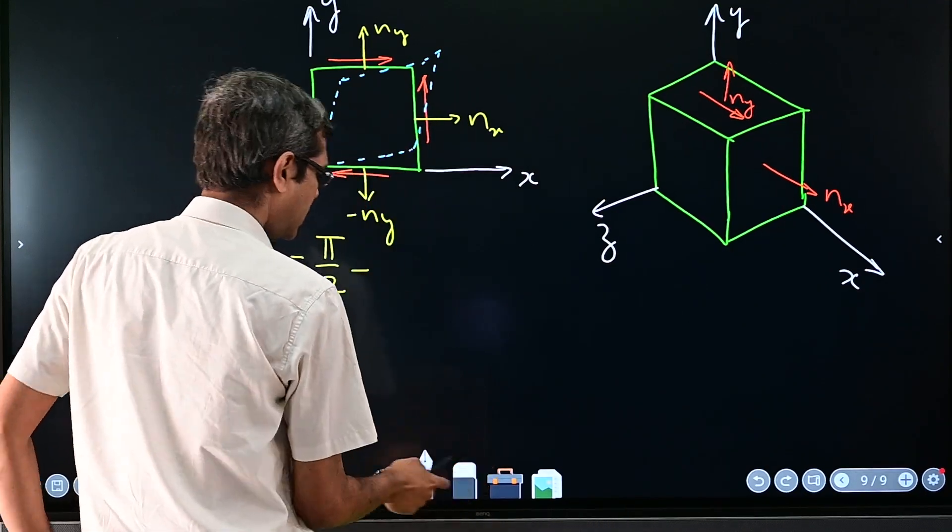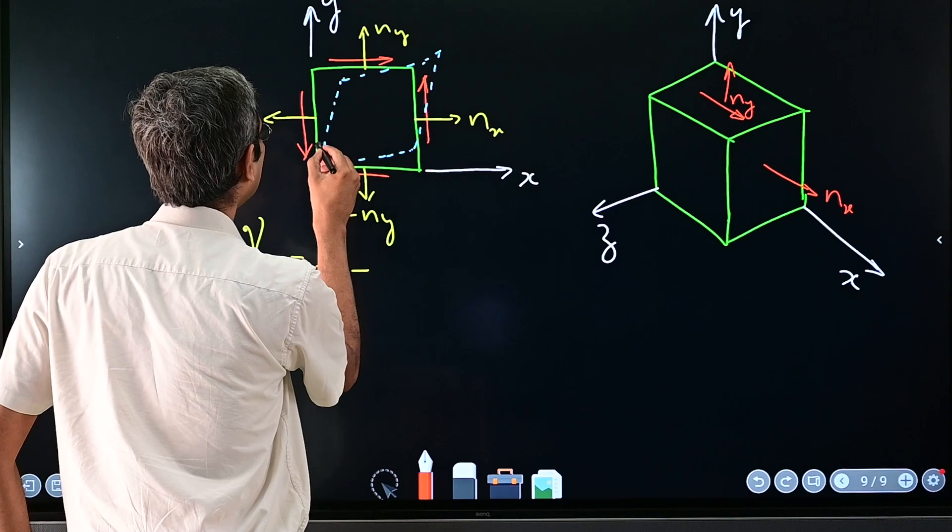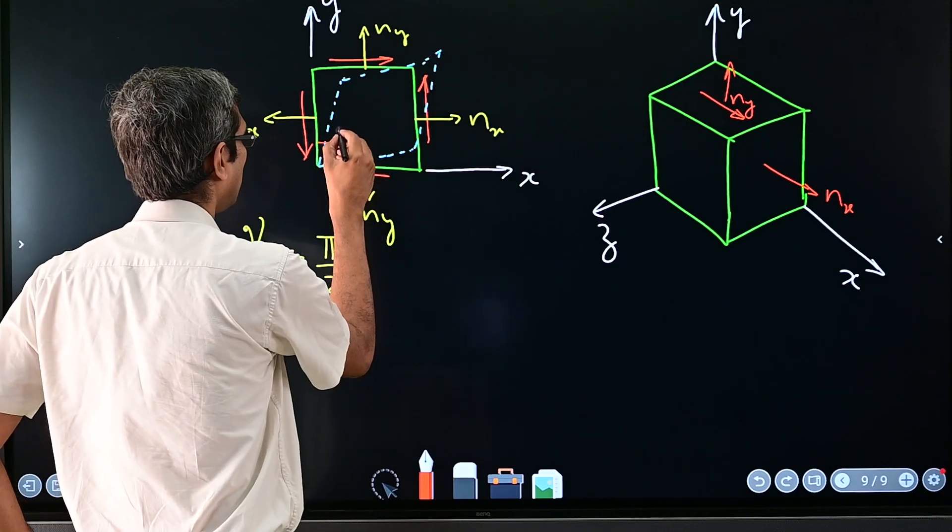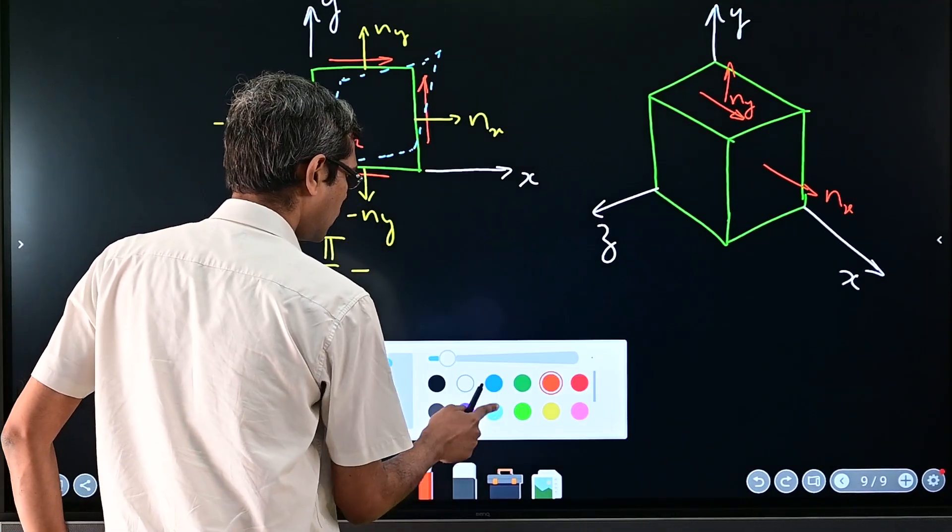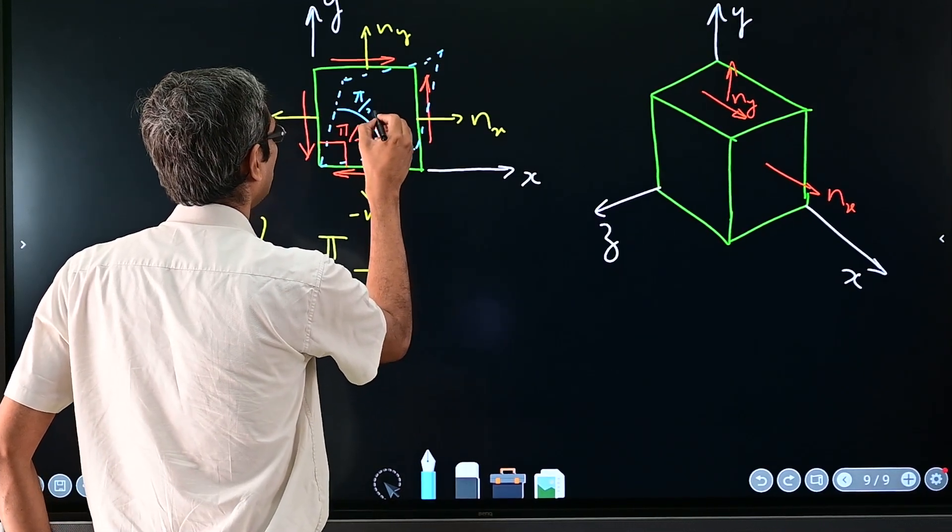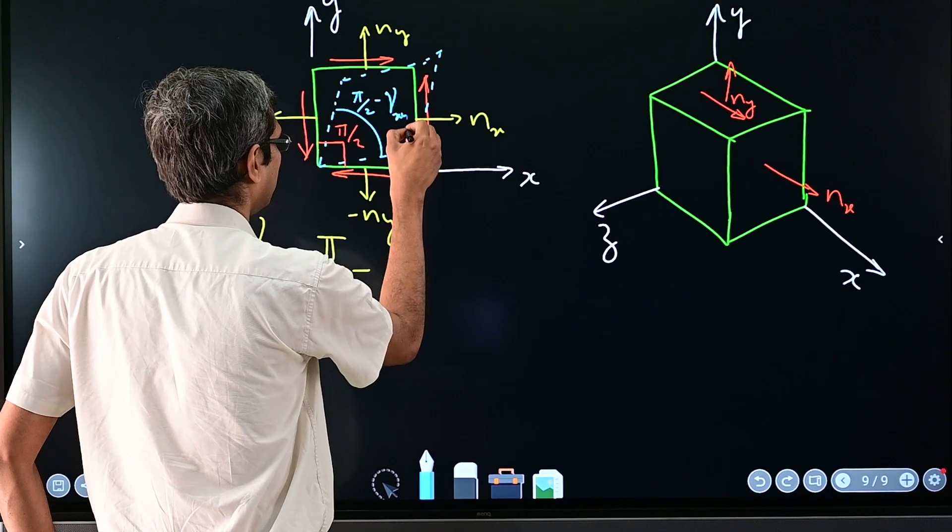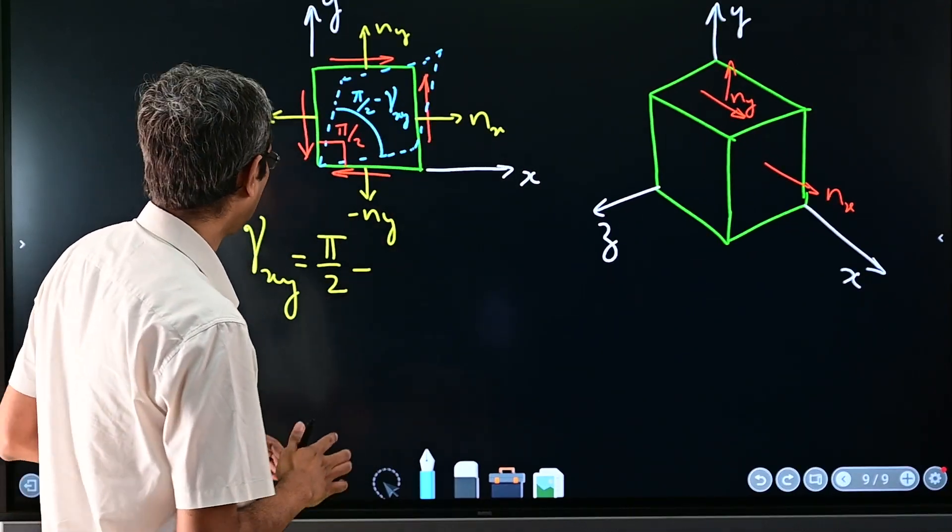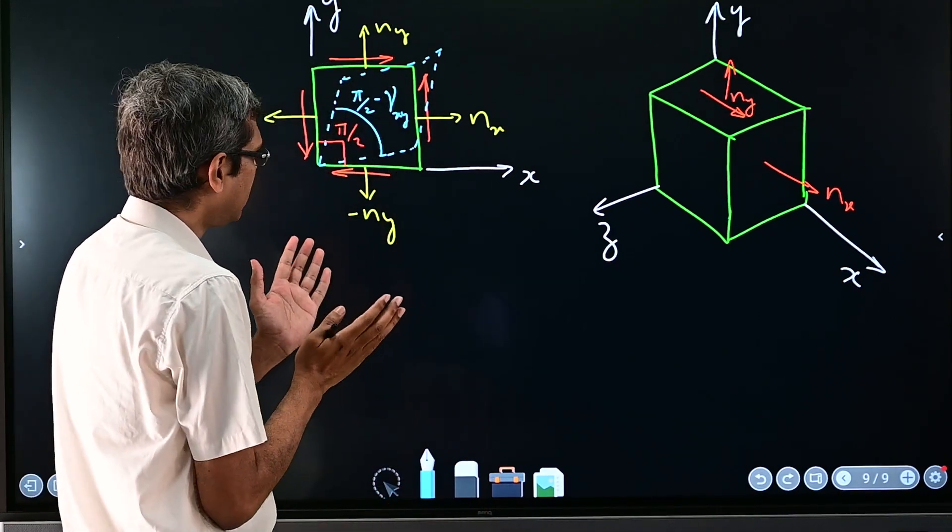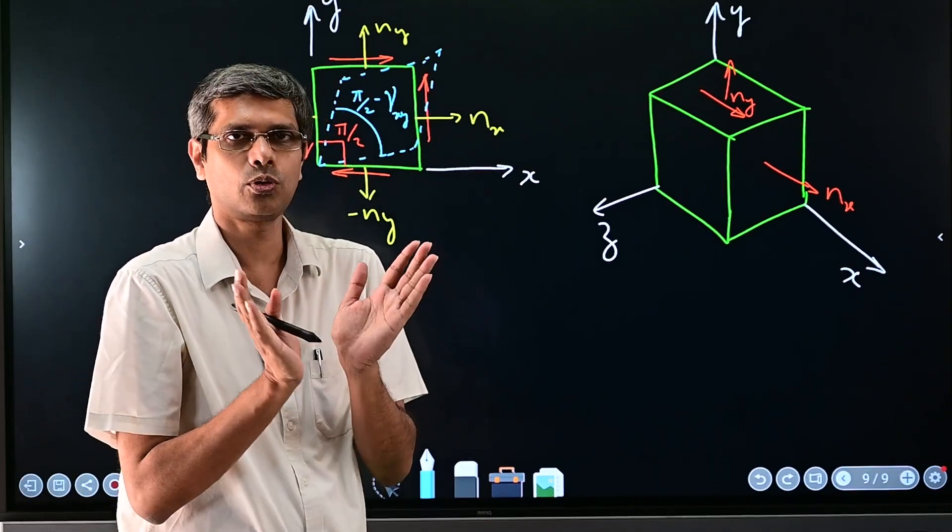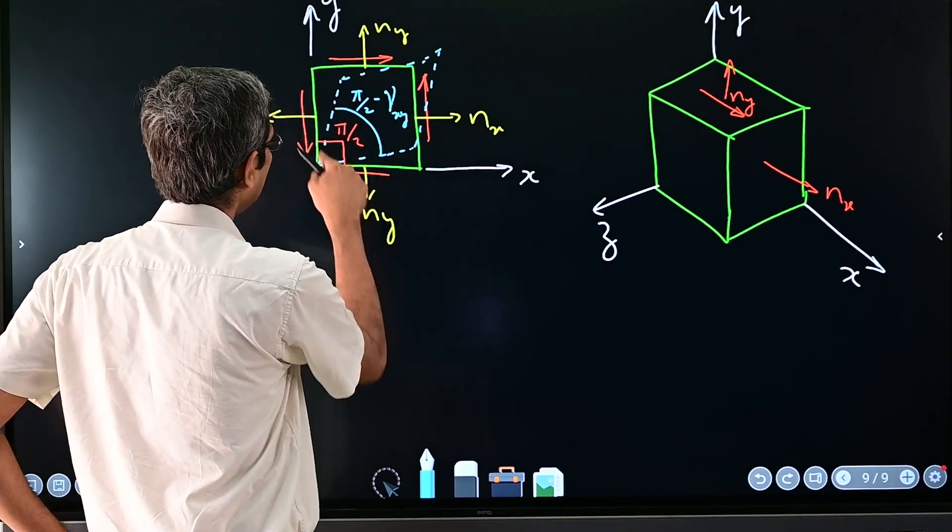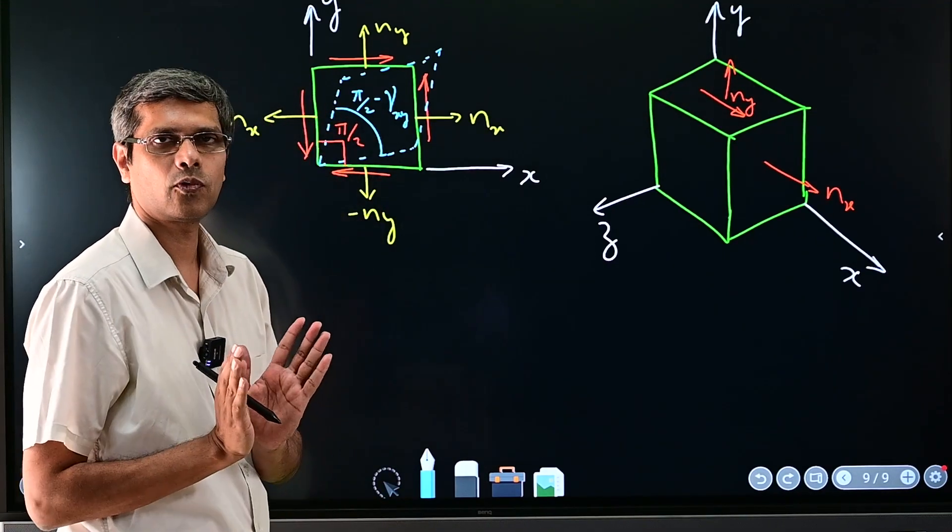See initially, the initial angle between those pairs of plane was 90 degree or pi by 2, and now their angle is pi by 2 minus this gamma_xy. So that is how we define it. So this—I'll erase—the change in angle which has happened to pair of planes which were initially pi by 2.